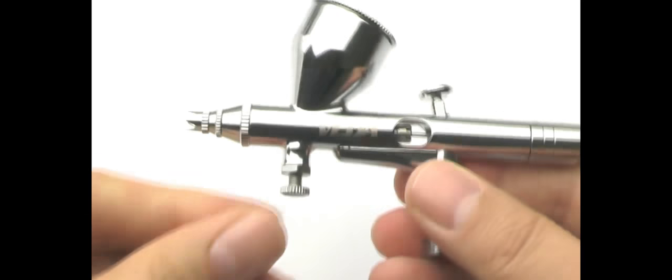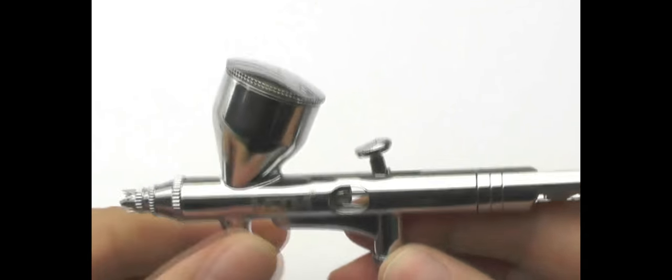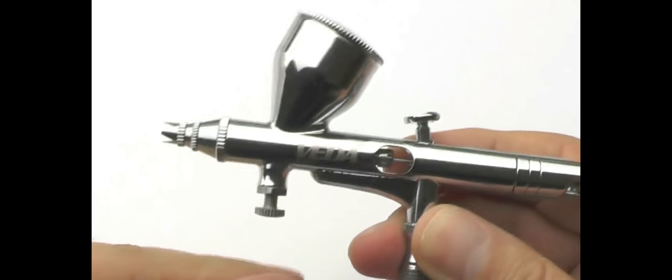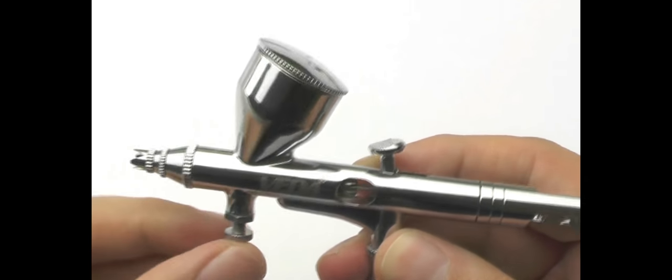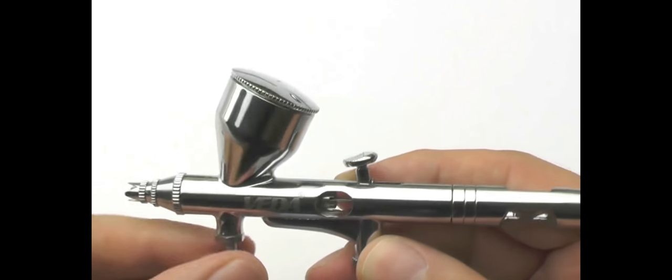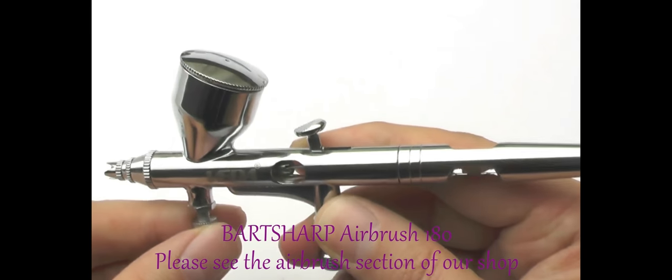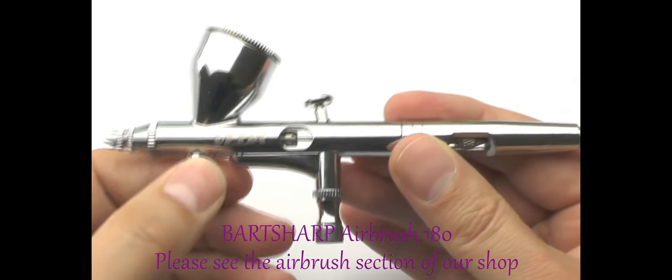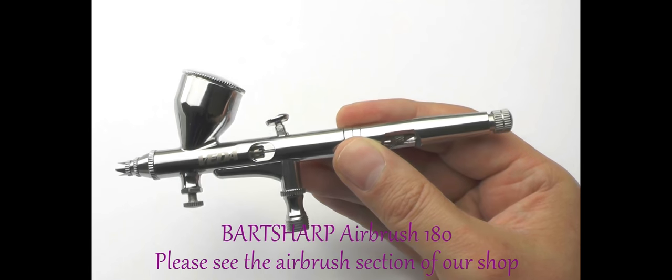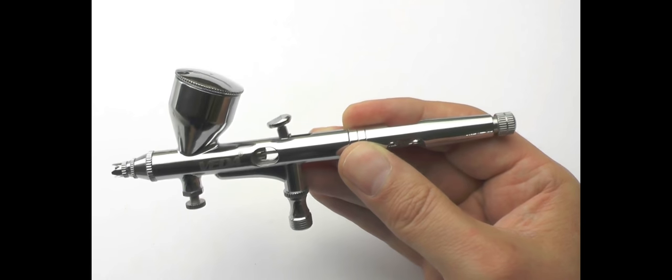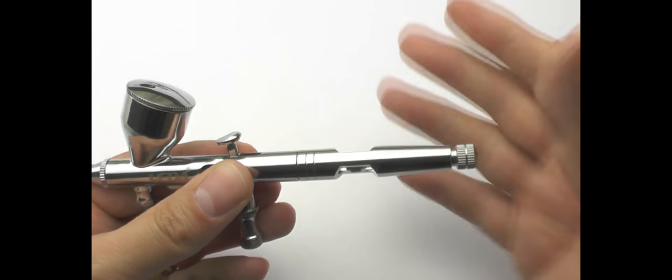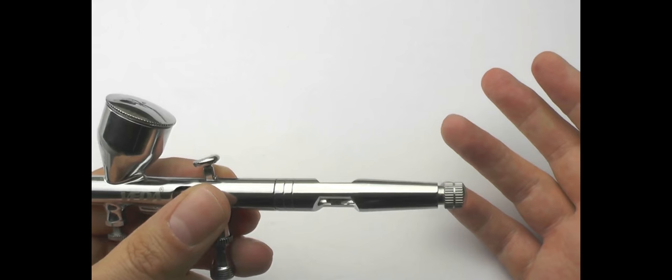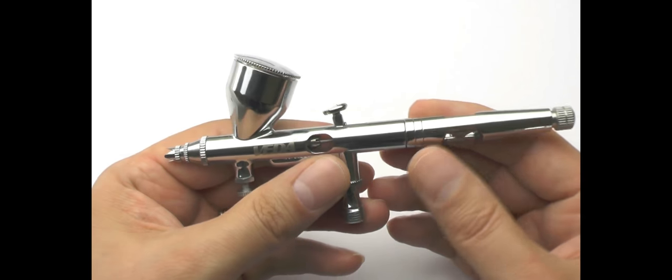Just moving up a little bit more, got the Veda 186. Again, dual action: press down for air, pull back for paint. This has actually got a micro air control just here, and that really allows for quite fine detailed artwork, and it has the adjuster on the back as well. So really that's it.